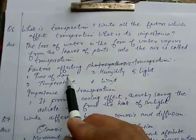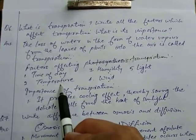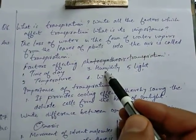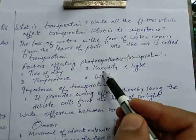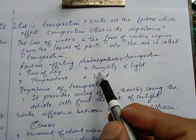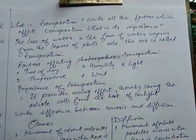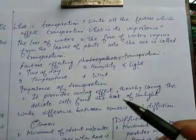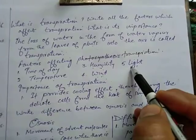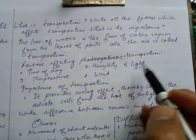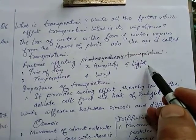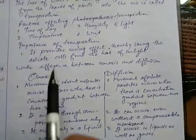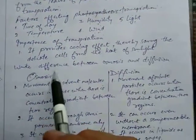Time of day means day or night. With increase in temperature, the rate of transpiration increases. Humidity is the amount of moisture present in the air; if humidity is more, the rate of transpiration is less. If the velocity of wind increases, the rate of transpiration increases. Light plays a major role in transpiration as it helps stomata to close or open.